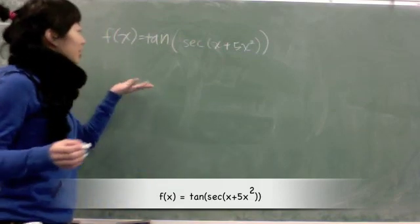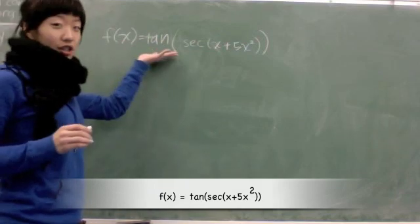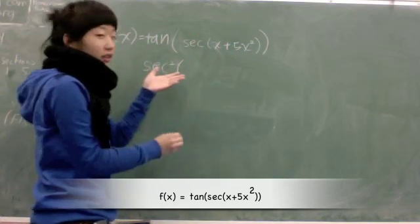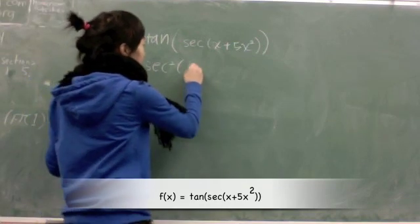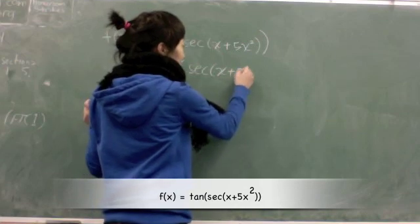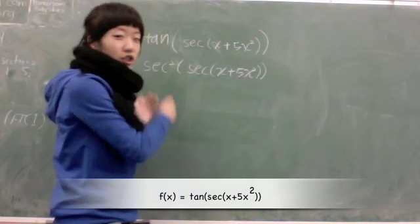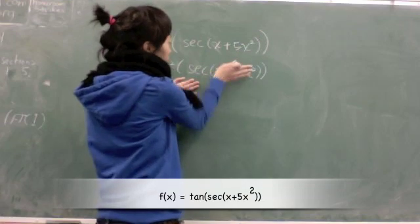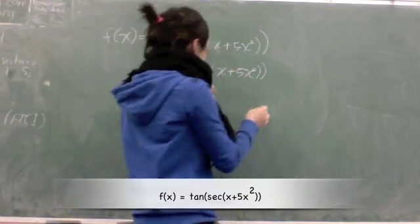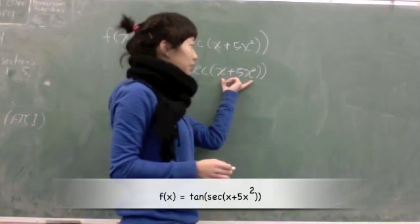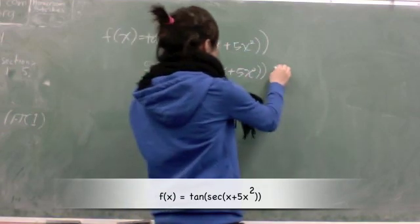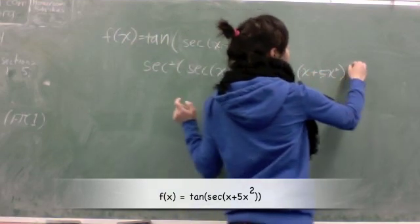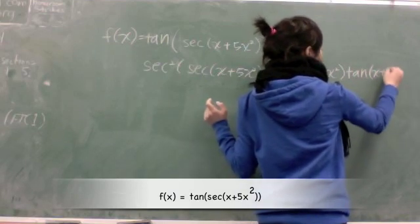So, using the chain rule, I'll get the derivative first of the outside. The tangent — the derivative of tangent is secant squared. I'm leaving the inside, because we have to do the outside first; we'll rewrite the inside. And then, using the chain rule, going into the inside, we'll take the derivative of secant. The derivative of secant is secant x tangent x. But this is the x, so we would have to write that in both secant and tangent, which will be secant of (x + 5x²) multiplied by tangent of (x + 5x²).